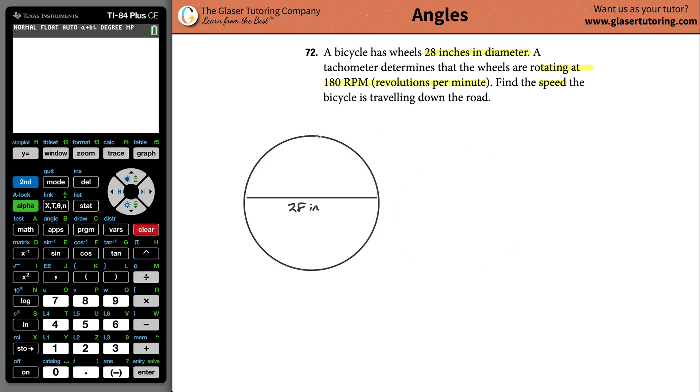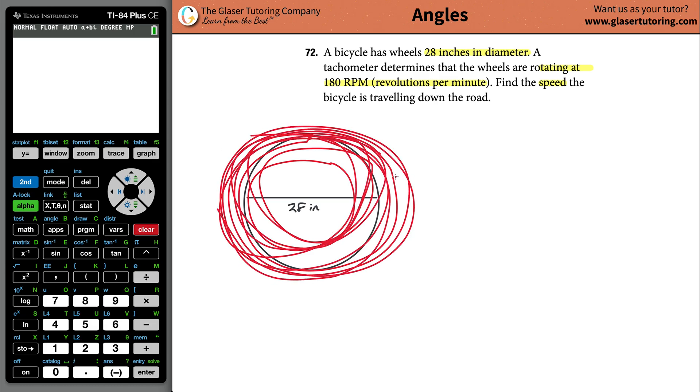Assume it's a bicycle with two wheels, going down the road, rotating at 180 revolutions every minute. So that means as one minute passes, let's say you have a particular point here - every minute this point on the wheel is going to go around 180 times. 180 RPM.